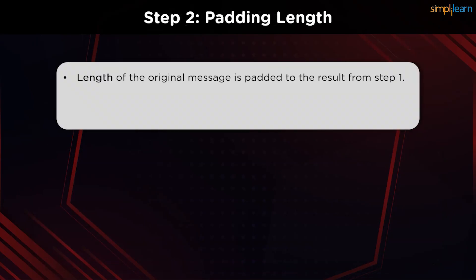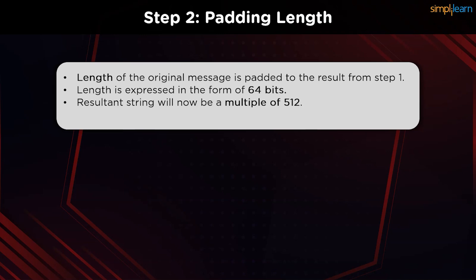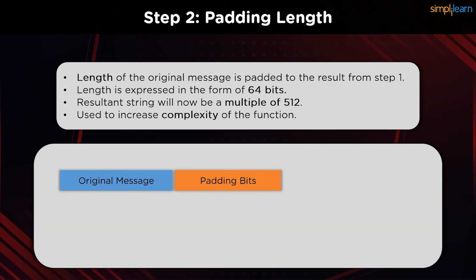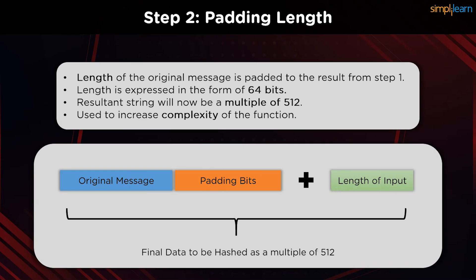Next, we proceed to pad the length bits. In the first step, we appended the message such that the total length of bits was 64 bits short of any multiple of 512. Now we add the length bits so that the total number of bits in the message is perfectly a multiple of 512 — meaning 64 length bits are added to the message. Our final string to be hashed is now a definite multiple of 512.